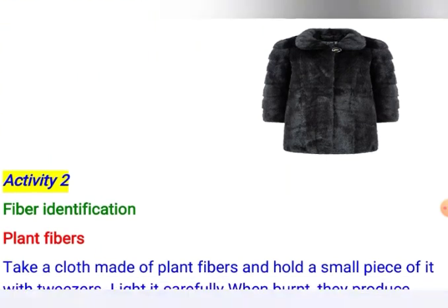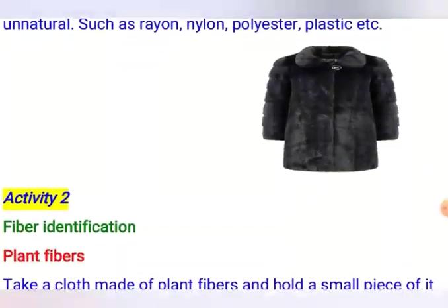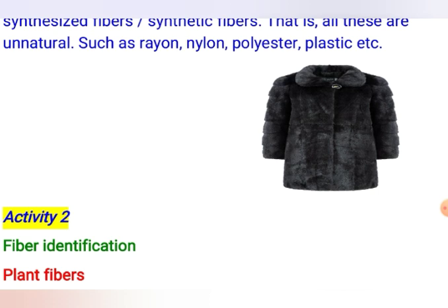To summarize: fibers are fine filaments of thread and are of two types based on their source — natural or synthetic. Natural fibers are obtained from natural sources. Plant fibers, such as cotton and jute, come from plants. Animal fibers, such as silk and wool, come from animals.